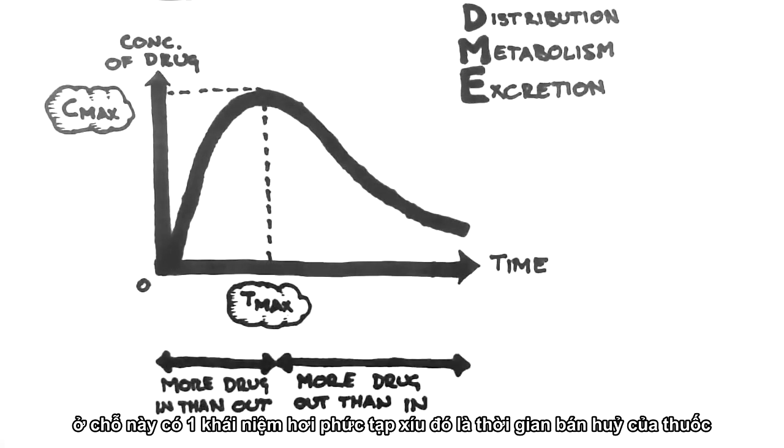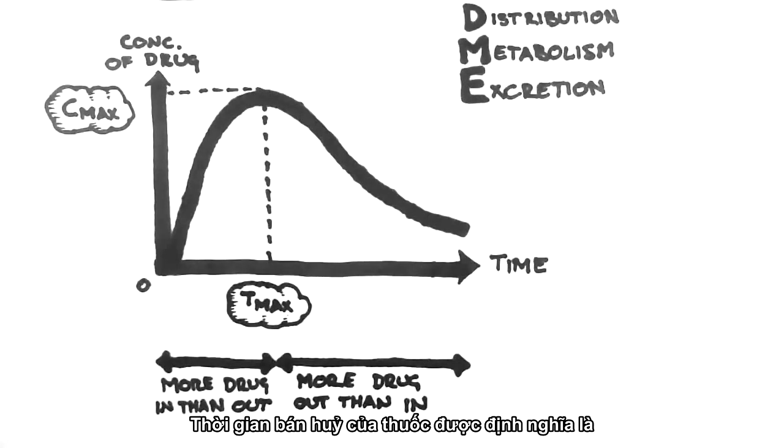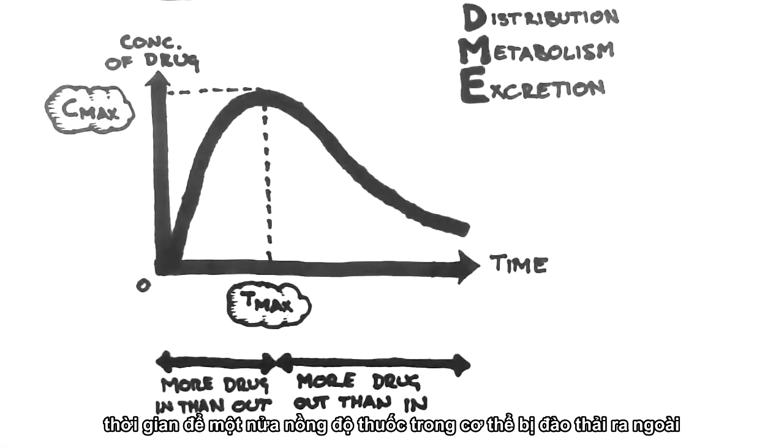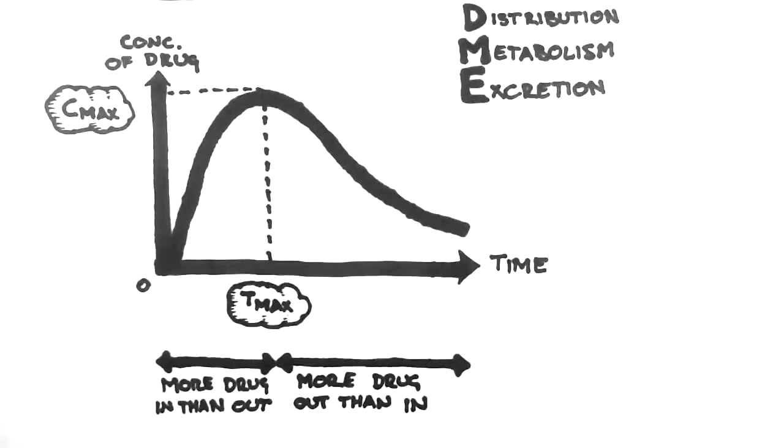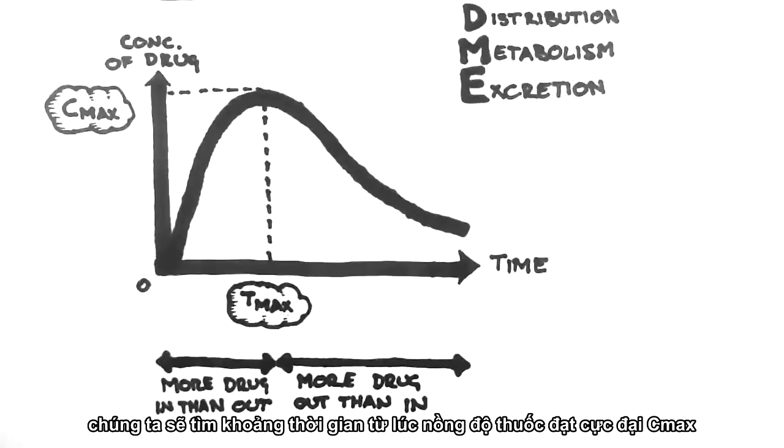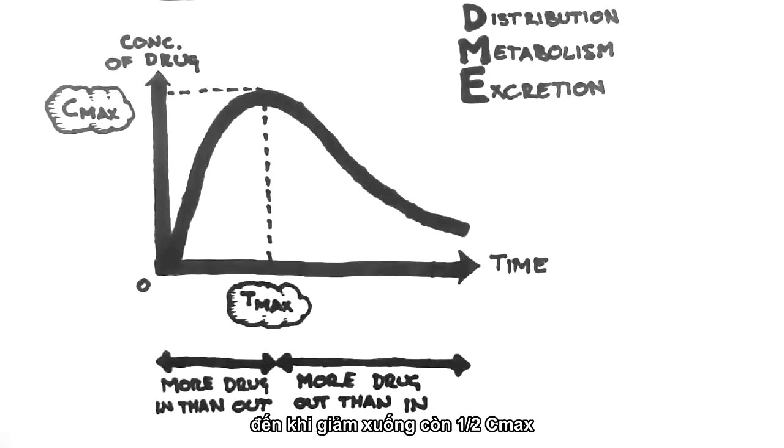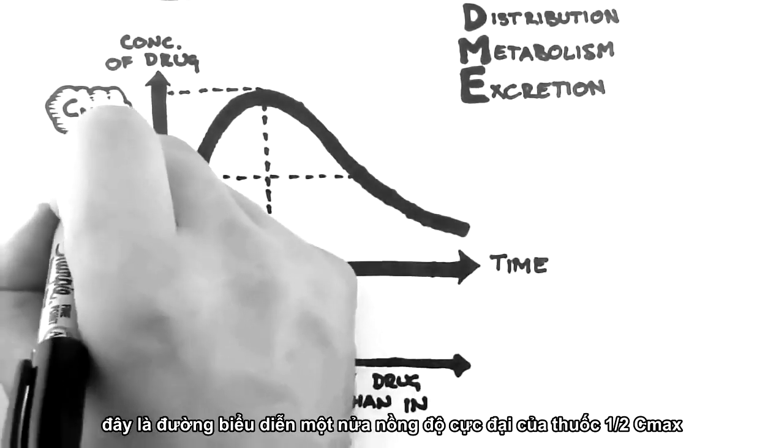Now a slightly more confusing concept is the half-life of a drug. The half-life is, by definition, the time it takes to remove half of the current concentration of drug from the body. So let's consider the half-life on this graph. If we begin at Tmax, we want to see how much time it takes for the concentration of the drug to decrease from Cmax to half of Cmax.